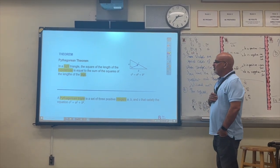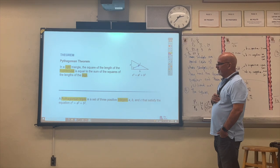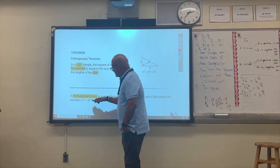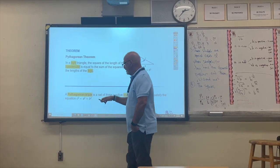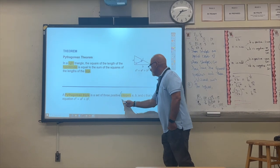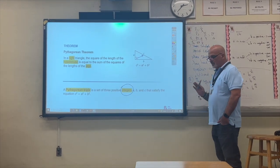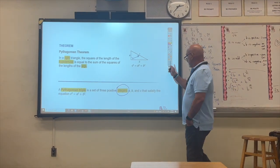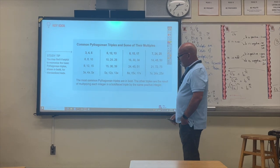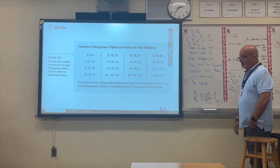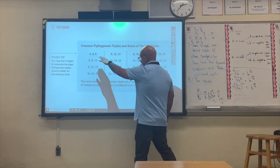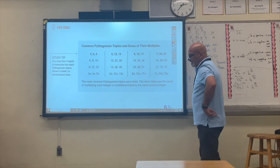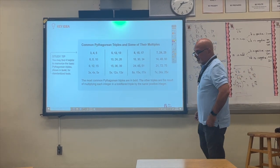Now let's see what Pythagorean triples are. Pythagorean triples are side lengths that satisfy the Pythagorean theorem, but they must all be integers. Decimals are not allowed in Pythagorean triples. In the next slide we have some of the most common Pythagorean triples.